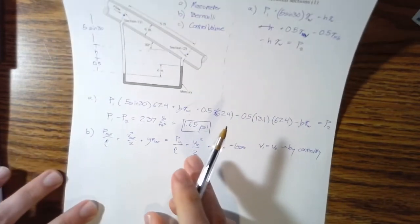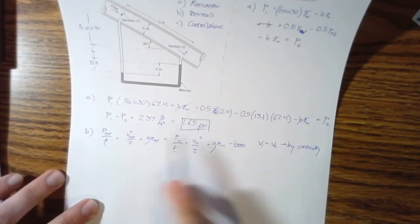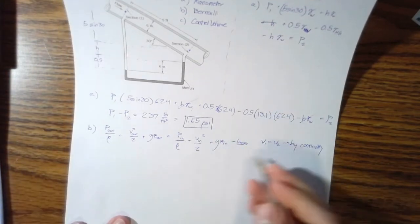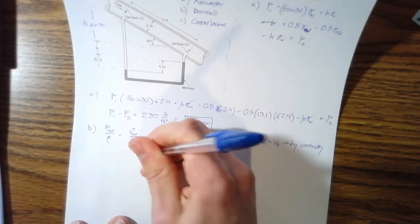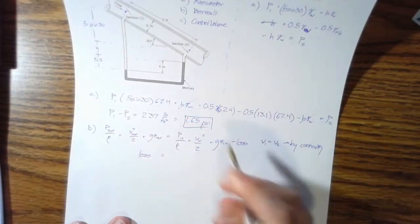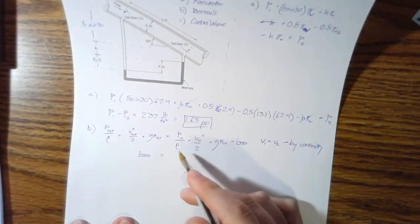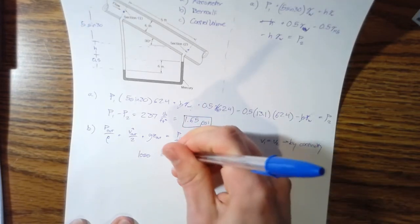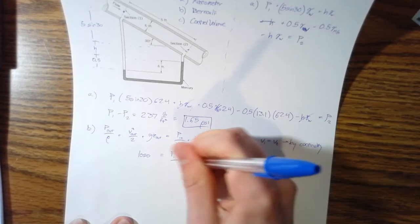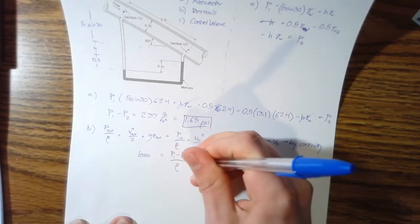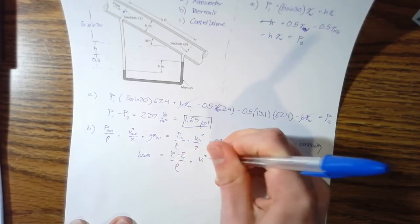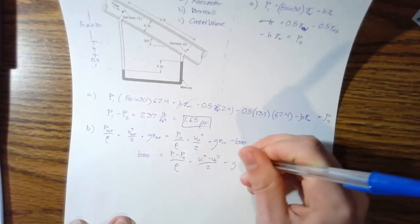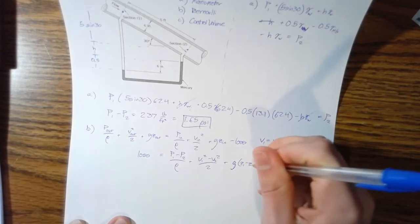So they're going to have the same volume there. So the difference between these two is going to be zero, right? So we'll shuffle this around to solve for our loss variable and then also, plug values in. Well, we won't plug values in yet, but so P one minus P two over rho plus V one squared minus V two squared over two plus G times Z one minus Z two.